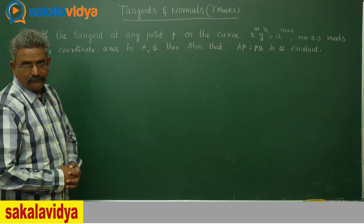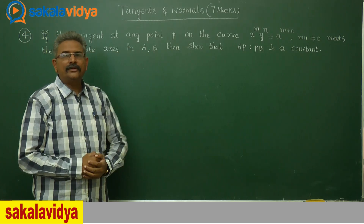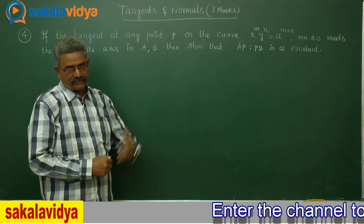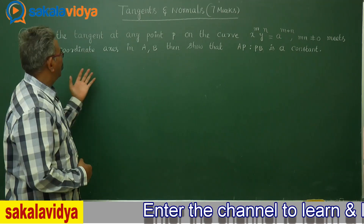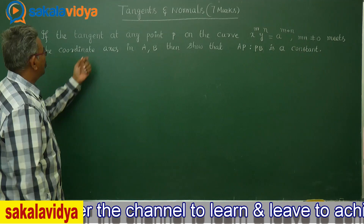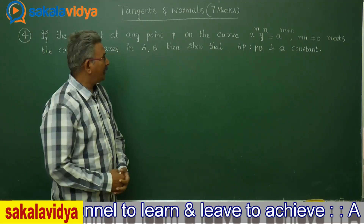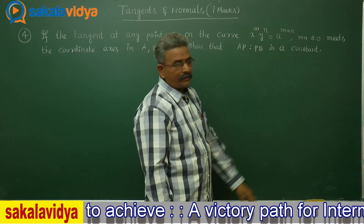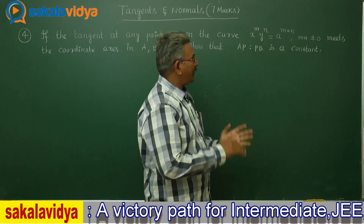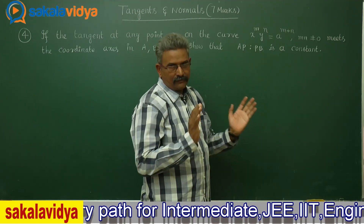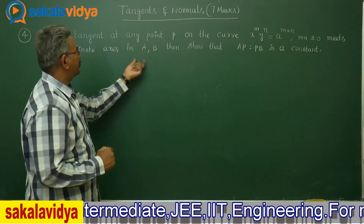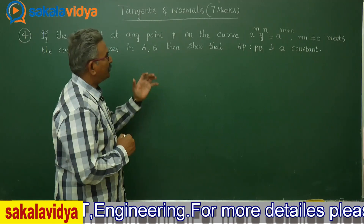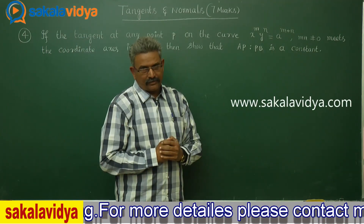Let us discuss one more problem on tangents and normals. This is an important problem. It may appear in the examination for 7 marks. First, let me read the question: If the tangent at any point P on the curve x^m · y^n = a^(m+n), where m and n do not simultaneously equal 0, meets the coordinate axes at A (on x-axis) and B (on y-axis), show that AP:PB is a constant.